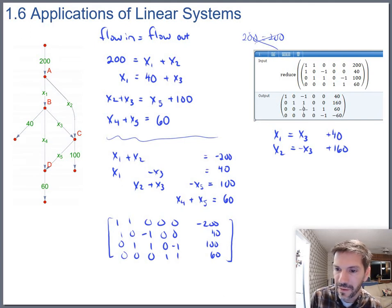Okay, so next row x2 equals negative x3 plus 160. There's no pivot in the x3 column, so the next one I'm going to write down is going to be x4, but since we're skipping over it, since it's a free variable, I'll go ahead and write x3 equals x3.